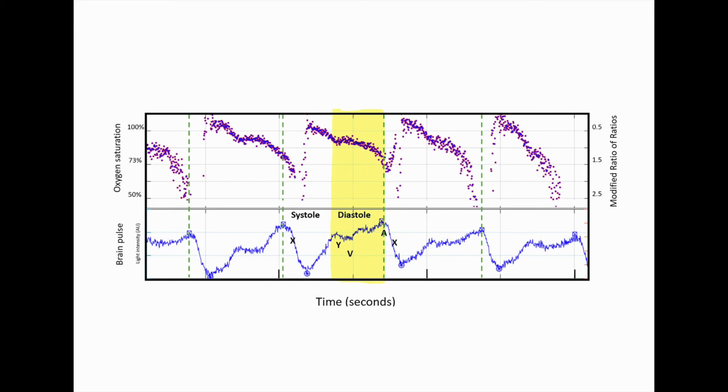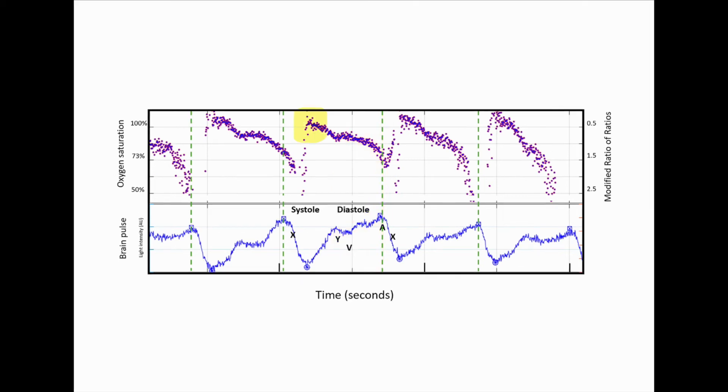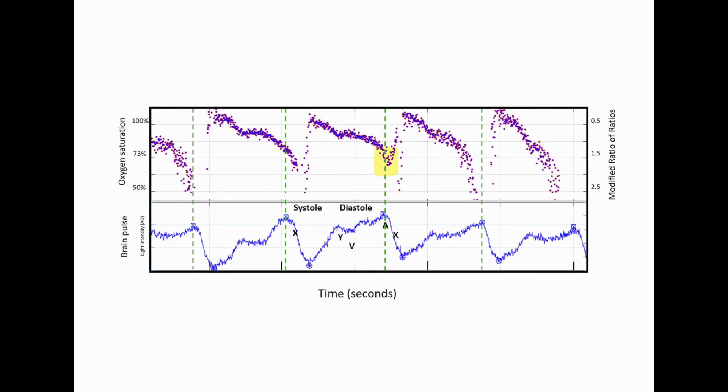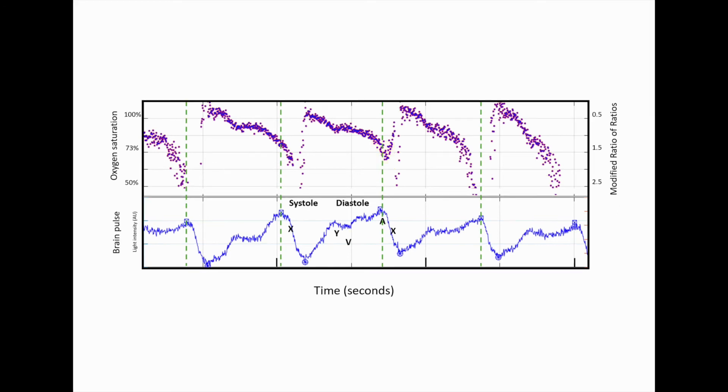What we can see is that during systole, the brain oxygen levels go up to around 100%, but thereafter they fall, and by the end of diastole, they have fallen to around 70%. This is consistent with the optical signal arising from blood, predominantly in the brain microcirculation.